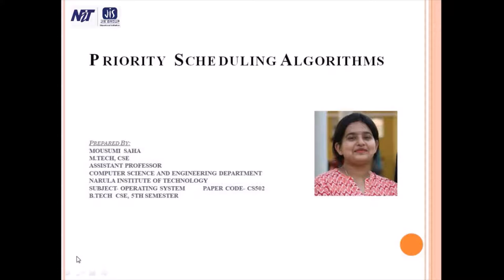Today we discuss about Priority Scheduling. In our previous class, we discussed some non-preemptive scheduling and preemptive scheduling. Under non-preemptive scheduling, we discussed first come first serve and shortest job first. And in preemptive scheduling, we discussed shortest remaining time first and round robin. Today we discuss Priority Scheduling.